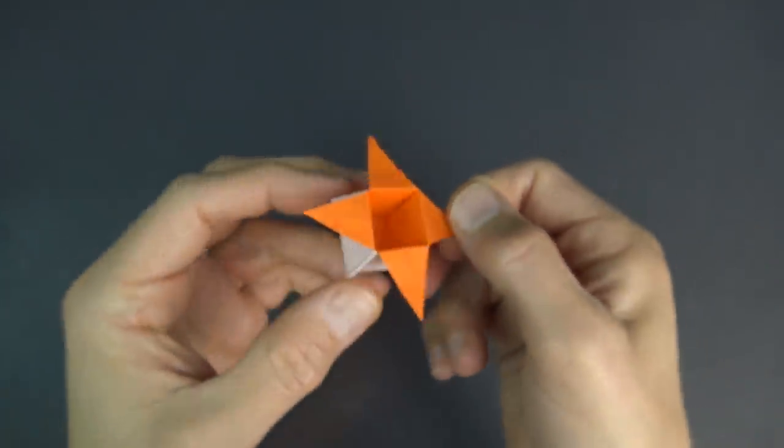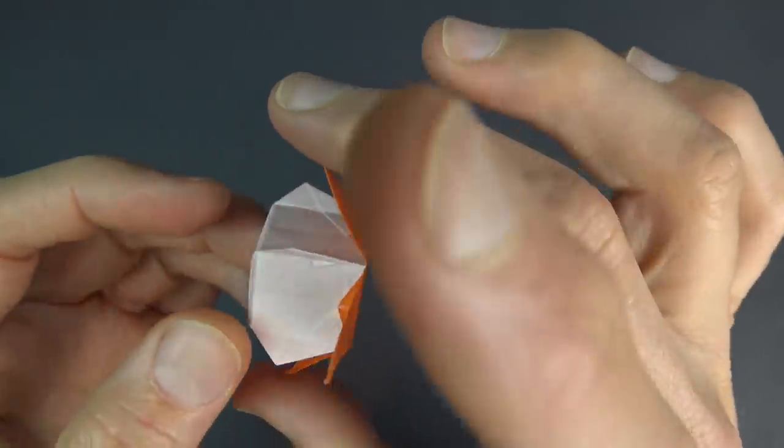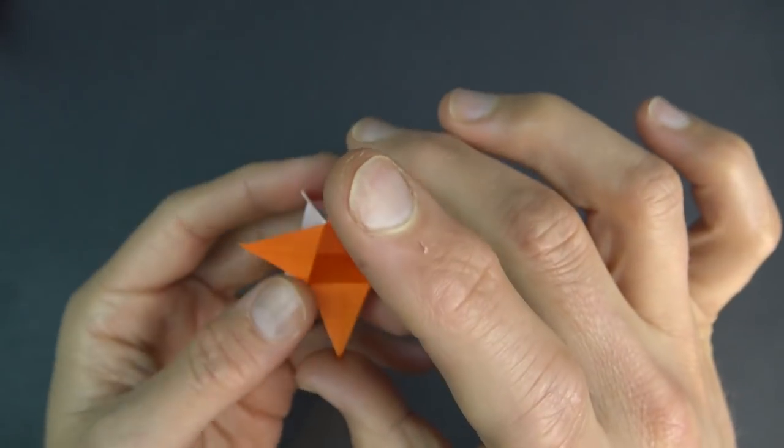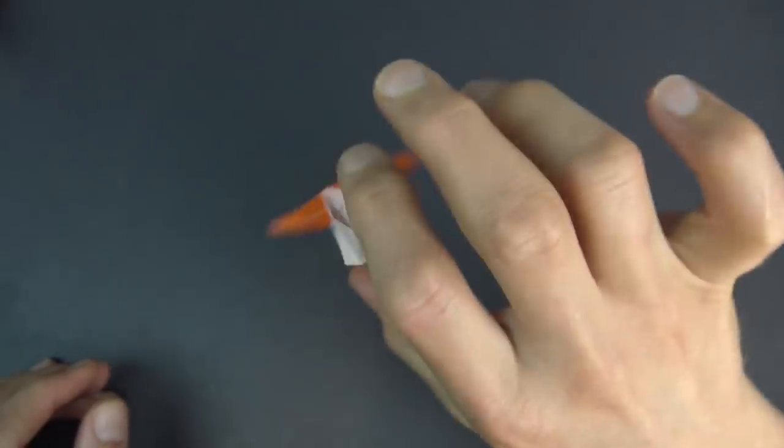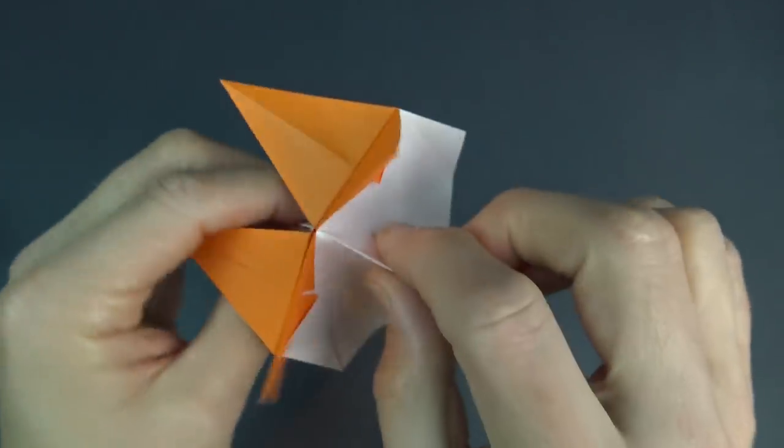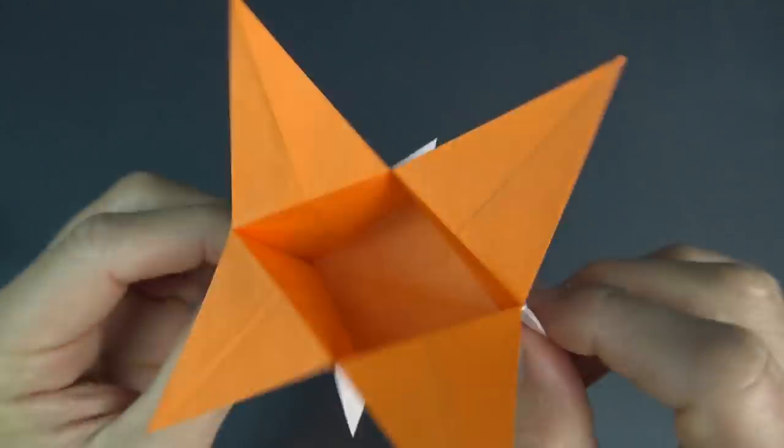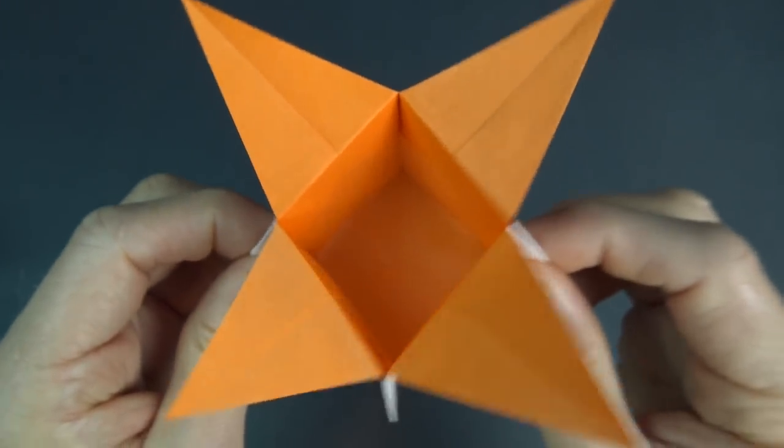Now if you fold it from smaller paper, you can make the oscillation fidget spinner, either like this or like this.